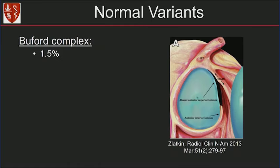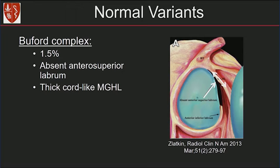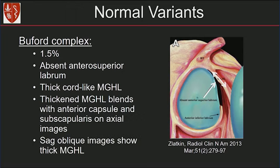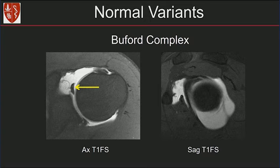The Buford complex occurs less commonly. It represents an absent anterior superior labrum and a thick cord-like MGHL. Remember, the MGHL blends with the anterior capsule and subscapularis, which helps you diagnose this normal variant. Here's the axial MR arthrogram image showing a nice thick MGHL with the absent anterior superior labrum, and on the sagittal image you see this thick MGHL — this is the Buford complex.